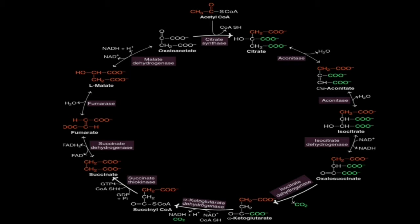In the isocitrate dehydrogenase reaction, NAD is converted into NADH. Isocitrate is converted through an oxalosuccinate intermediate, and then in a subsequent step — also catalyzed by isocitrate dehydrogenase — one carbon is removed as CO2 to form alpha-ketoglutarate.